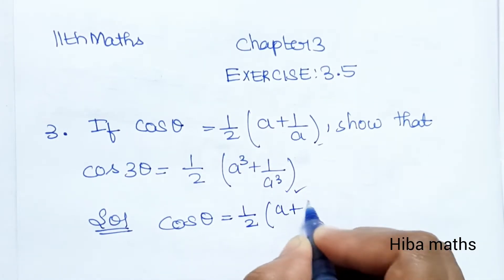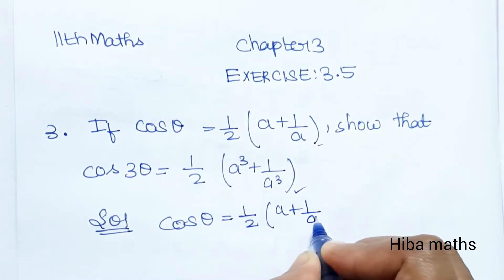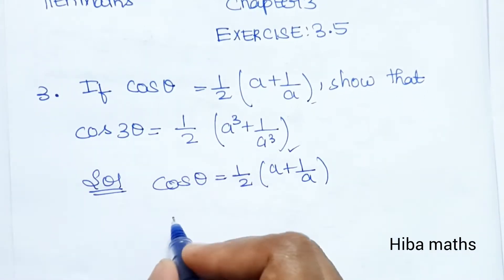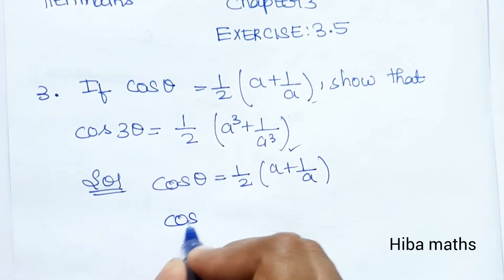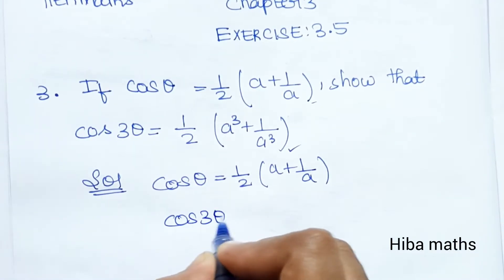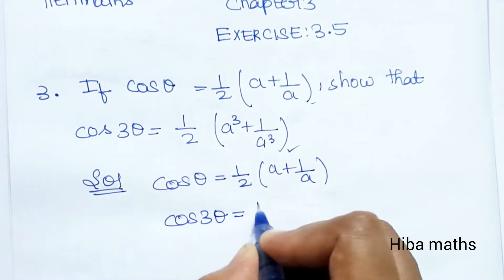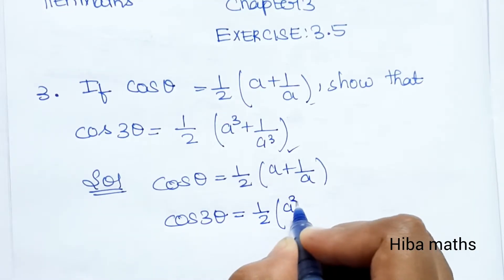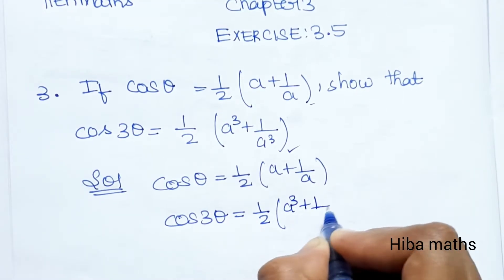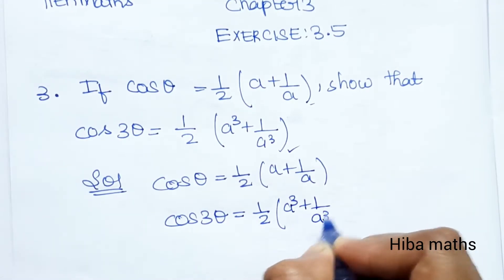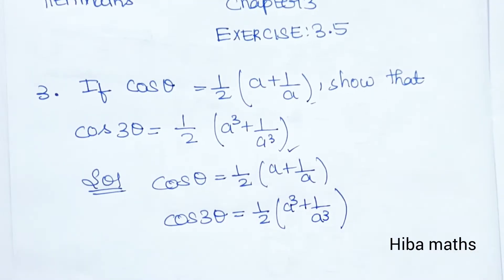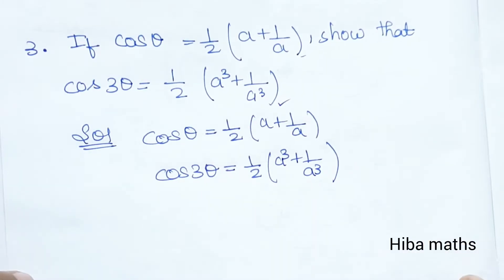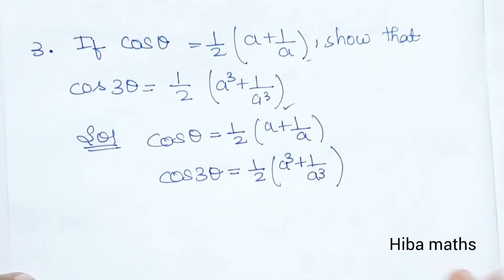Given cos theta is equal to 1/2 (A plus 1/A). We need to prove that cos 3 theta is equal to 1/2 (A cube plus 1/A cube).